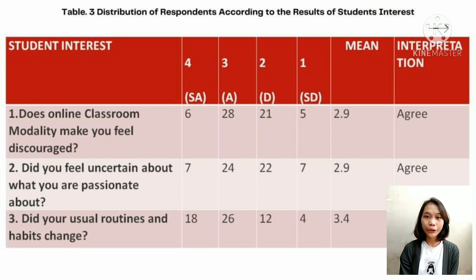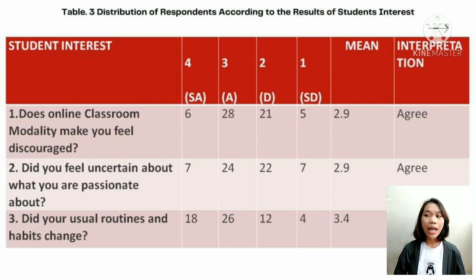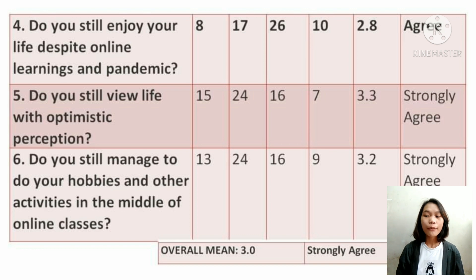Last is Table 3, which shows the distribution of respondents according to the results of students' interest. In factors affecting students' interest, there were six questions given. Three of them were equal to the interpretation of agree, with a rating scale of 2.01 to 3. And the other three questions were interpreted as strongly agree, with a rating scale of 3.01 to 4, with an overall mean of 3.0, interpreted as strongly agree.